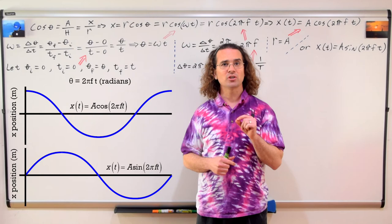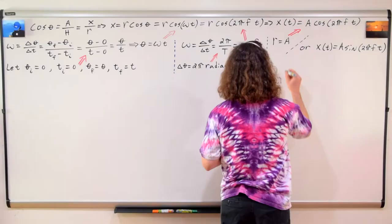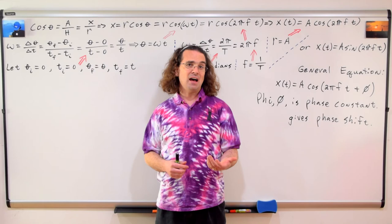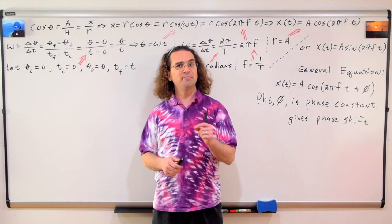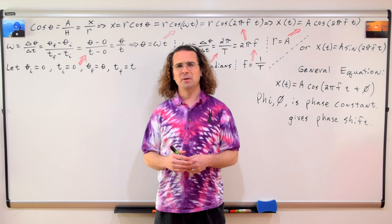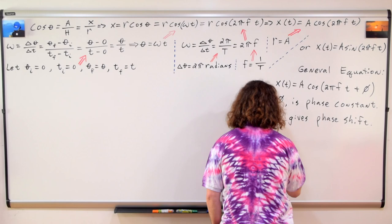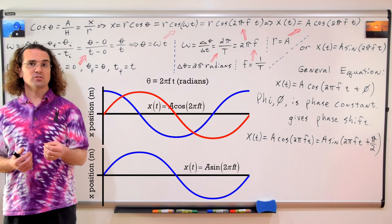Wait, what if it starts somewhere other than at the maximum displacement from equilibrium or at the rest position? What do we do then? Then you would need to use phi, the phase constant. The lowercase Greek letter phi is what is used to phase shift trig equations on the horizontal axis. I won't get into it much because the AP Physics 1 curriculum does not really concern itself with phi.